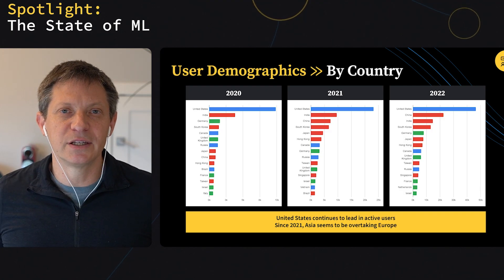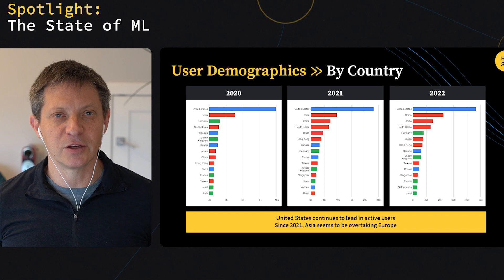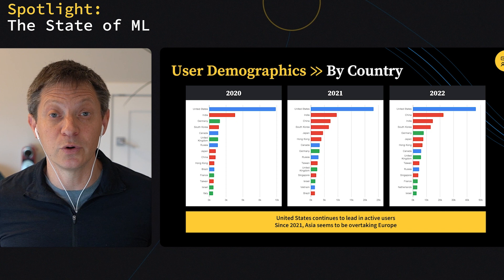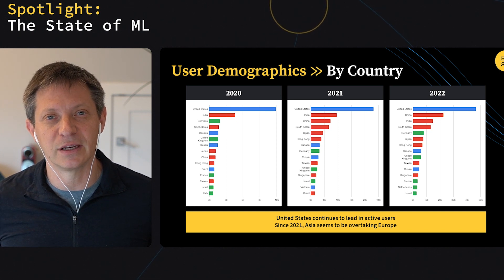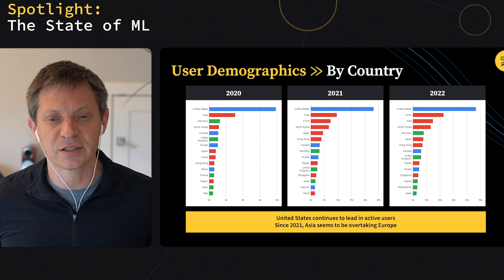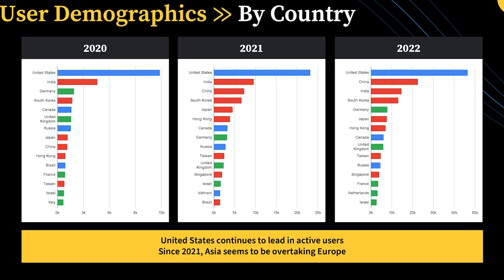When we look at demographics by country, one of the things you can notice from 2020 through 2022 is the rise of users in Asian countries. That's not to say that Europe, particularly Western Europe, is not still a strong user of the platform, but starting in 2021, users in Asia — China, South Korea, Japan — are really becoming ascendant as active users. The US is still leading across these years, but we see this big rise among the Asian countries.